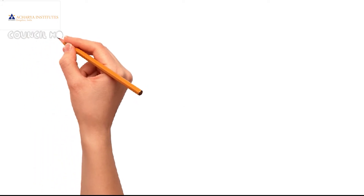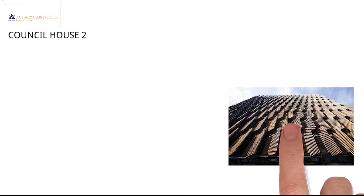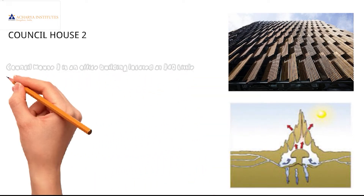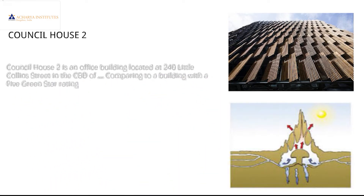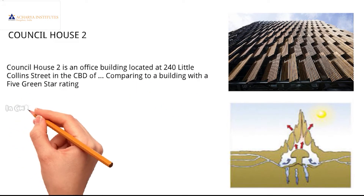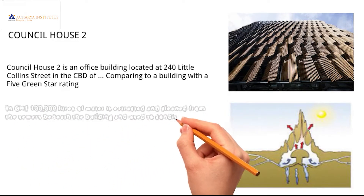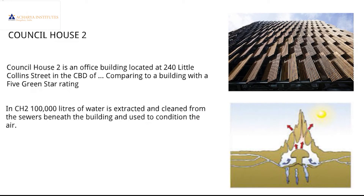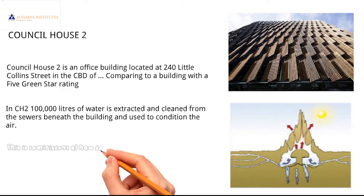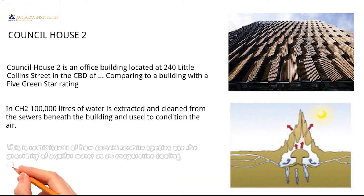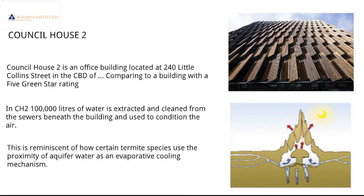Our first example would be Council House 2. Council House 2 is an office building located at 240 Little Collins Street in the CBD of Melbourne, Australia. It has a 5 green star rating. In this building, 1 lakh litres of water is extracted and cleaned from the sewers beneath the building and used to condition the air. This is reminiscent of how certain termite species use the proximity of aquifer water as an evaporative cooling mechanism.